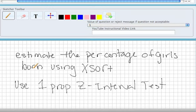Let's take a look at the question that you sent in. We're asked to estimate the percentage of girls born using the XSORT method. I happen to be familiar with this particular text that you're working with, and I know that for this question they want you to use the one proportion Z interval test.